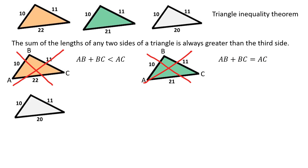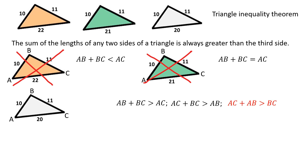Let's check the gray shape. The sum of AB and BC is greater than AC. The sum of AC and BC is greater than AB, and the sum of AB and AC is greater than BC.